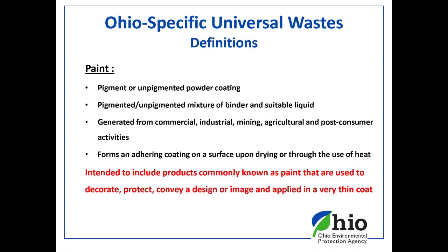Next we have paint, which has probably generated the most questions regarding the definition of universal waste. Paint is pigmented or unpigmented powder coating, or a pigmented or unpigmented mixture of a binder and a suitable liquid. The liquid could be a solvent or water-based. It's generated from commercial, industrial, mining, agricultural, and post-consumer activities. A paint forms an adhering coating on a surface upon drying or through the use of heat. The application through heat was added to the definition because that's how powder coatings are applied to a surface.